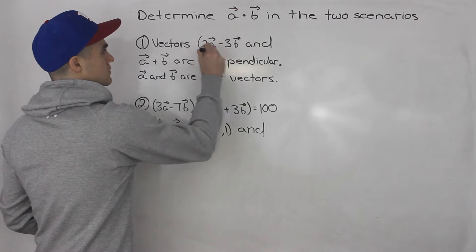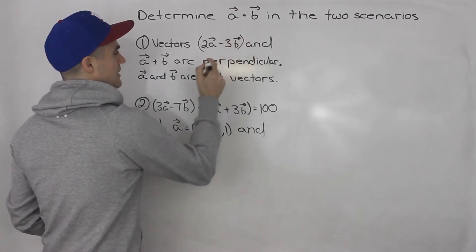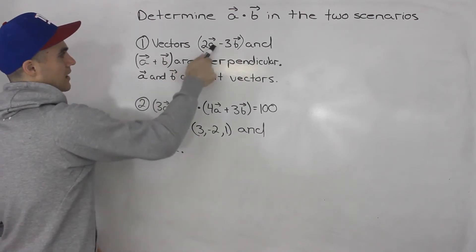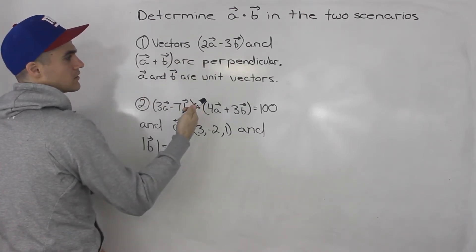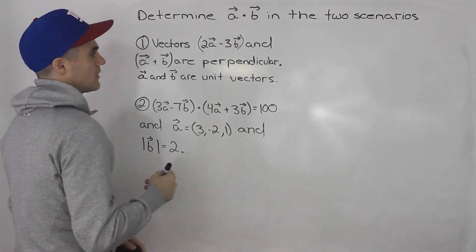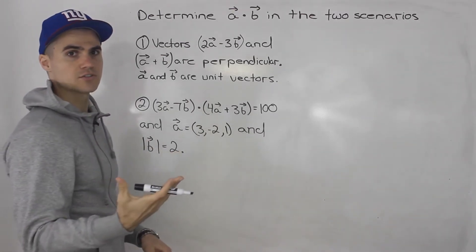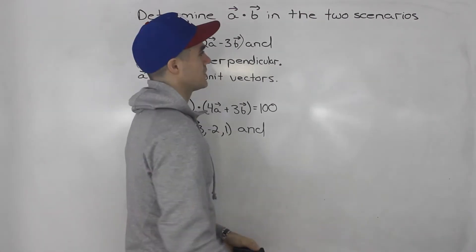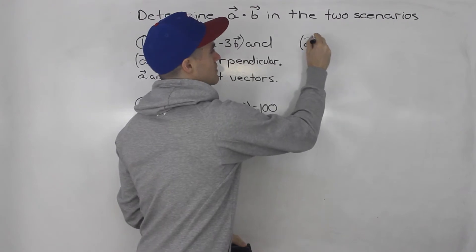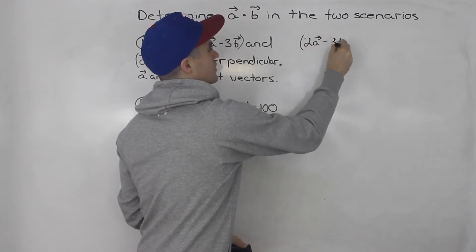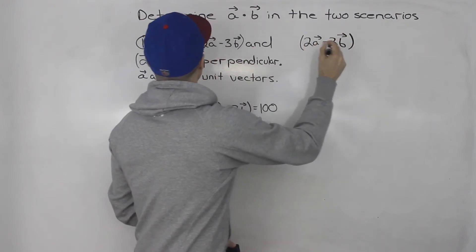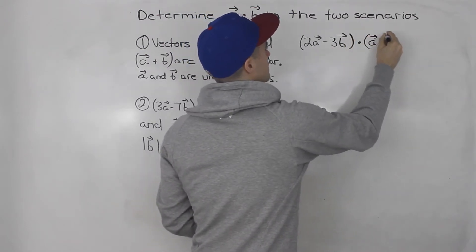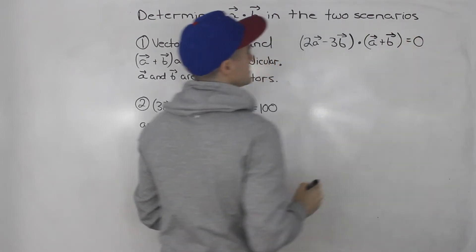Notice that 2a minus 3b is one vector and a plus b is another vector, and both of these vectors are perpendicular to each other. Now if two vectors are perpendicular, that means the dot product between them is zero. So we can say that (2a minus 3b) dot (a plus b) is equal to zero.